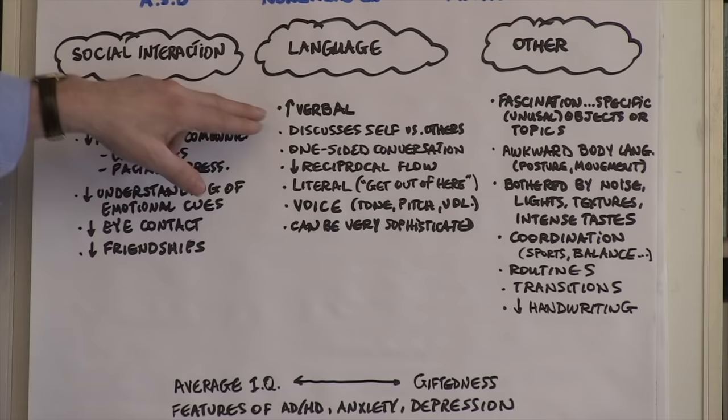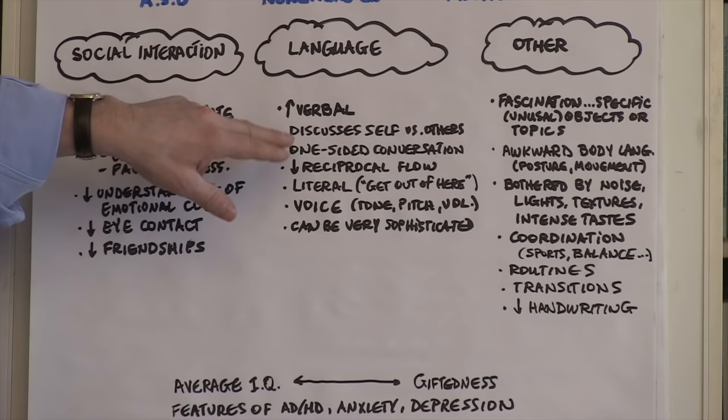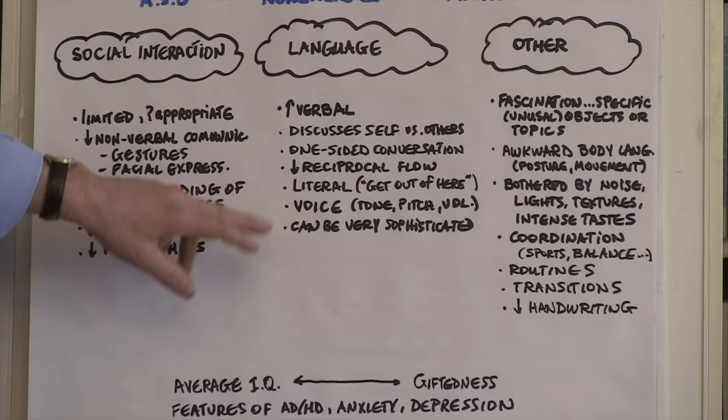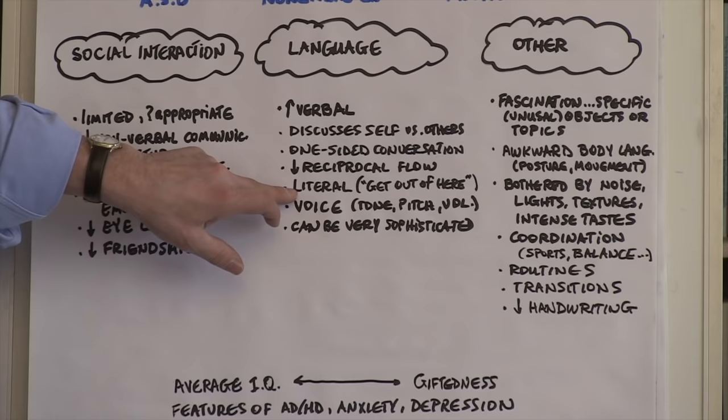In the language area, those with Asperger's are often extremely verbal, highly verbal, and their language can be very sophisticated at times. When they're talking, they tend to discuss themselves and their own interests rather than focusing on the interests of others. It can be a one-sided conversation, and some of that reciprocity — the reciprocal flow between one person and another — can be awkward.